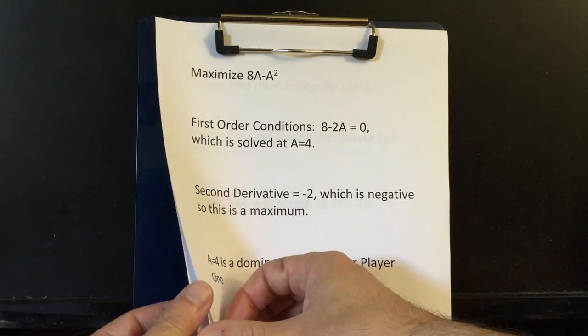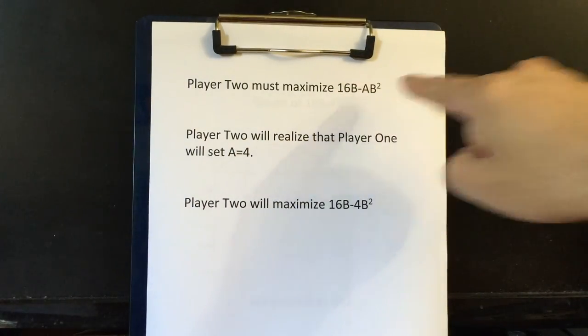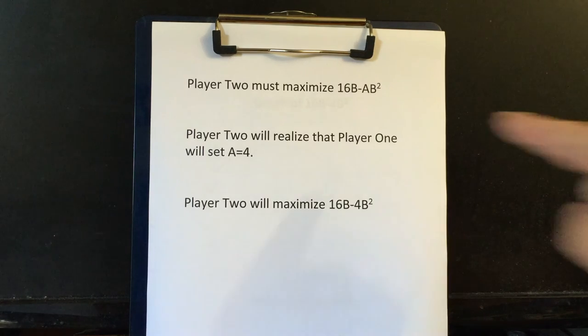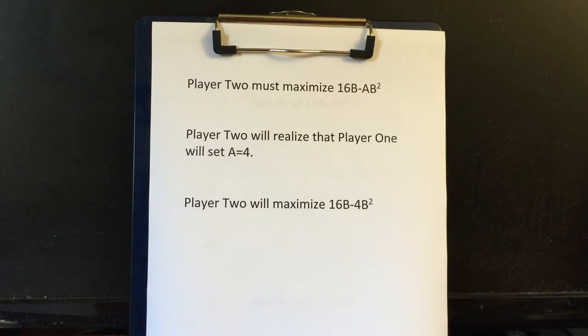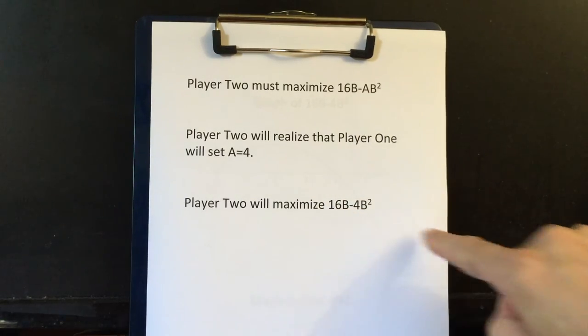Now let's figure out what player two should do. Player two must maximize this. That's a little bit harder than what player one has to do because player two now has to take into account what player one is going to do. But fortunately for us, player two will realize that player one has a dominant strategy of setting A equal to four. So player two will say, I'm officially supposed to maximize this, but I know that player one is going to put four in for this A. So I'm really just going to maximize this.